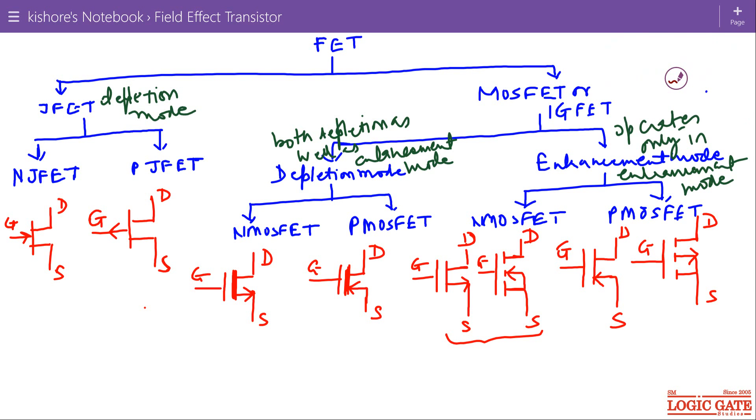In N channel JFET, we have pinch-off voltage and this pinch-off voltage is negative. And in P channel JFET, pinch-off voltage is positive. In depletion mode MOSFET, again we use pinch-off voltage and in N MOSFET, it is negative. And in P MOSFET, it is positive.